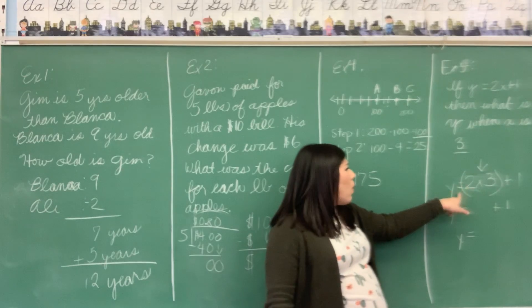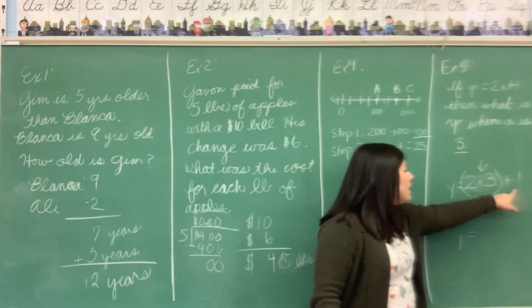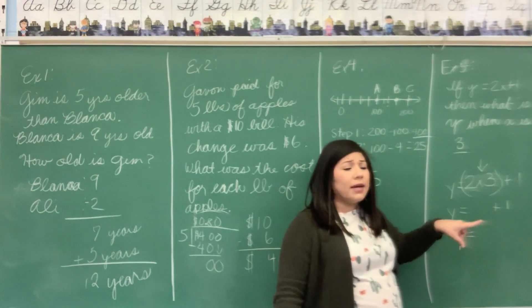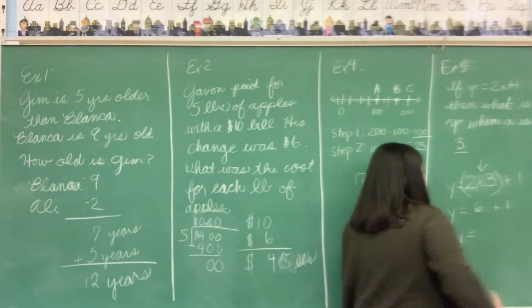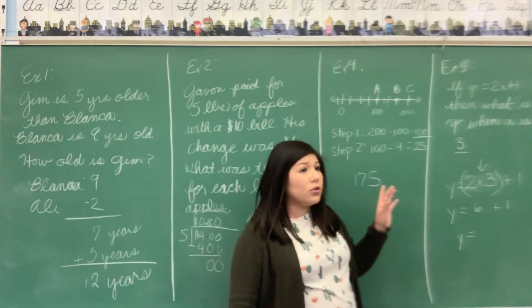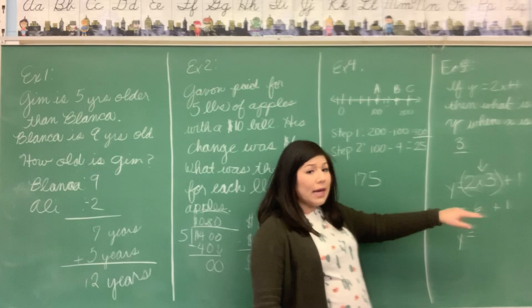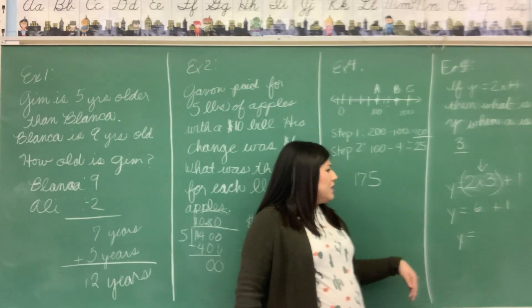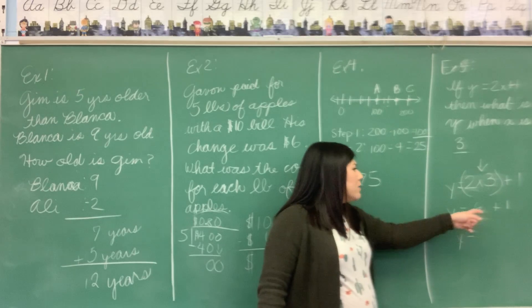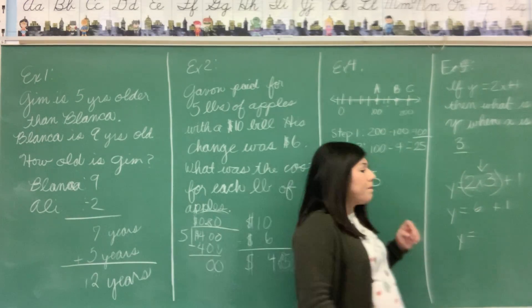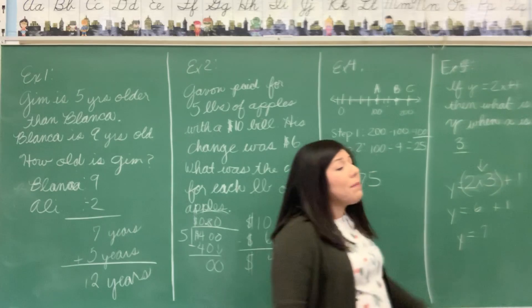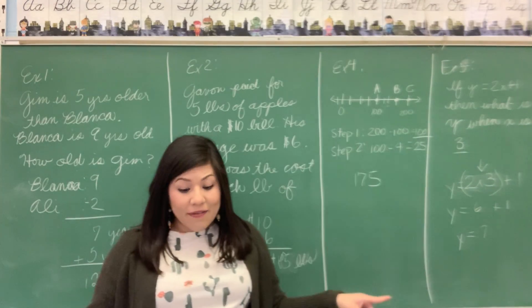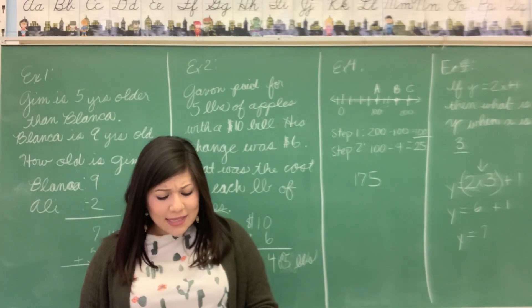So basically what this is saying is Y equals two times three plus one. What's two times three? Two times three is six. So that's the answer for that two X. Now let's add that together. Once I have that in, I can add whatever is outside of the parentheses to that. Y equals six plus one. What's six plus one? Very good. It's seven. So that means that Y is seven.